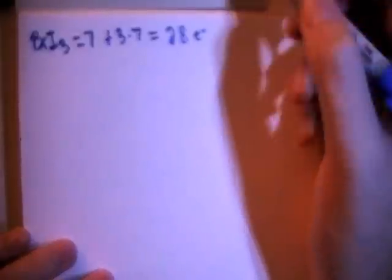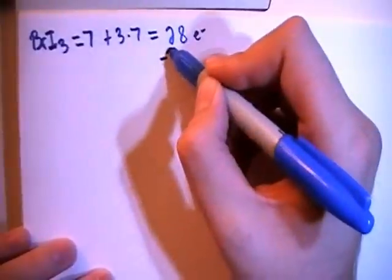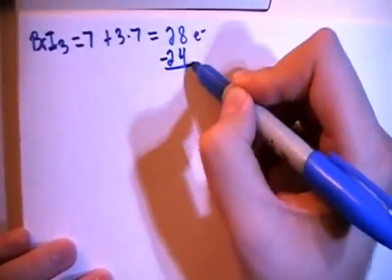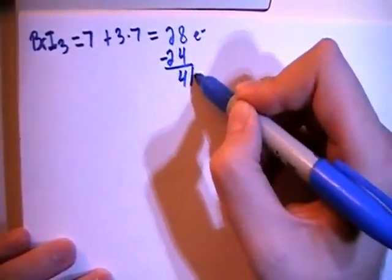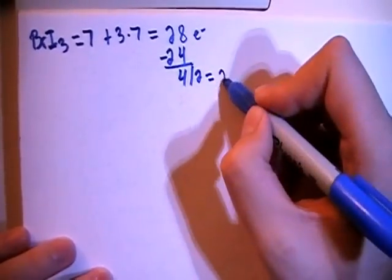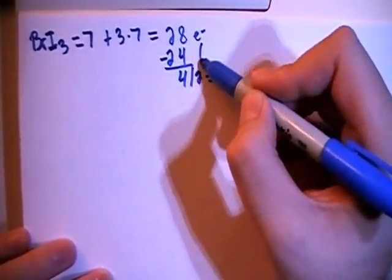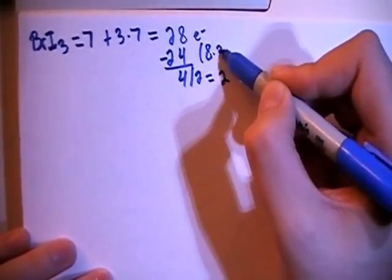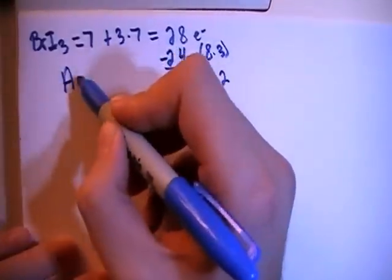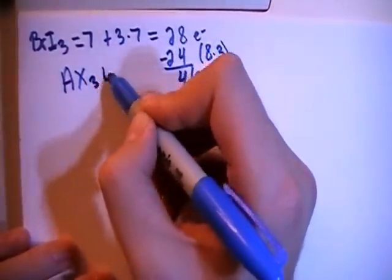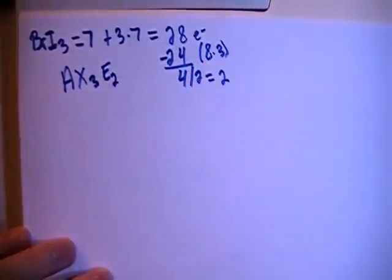Now we can subtract out the largest multiple of 8, which in this case will be 24, and that leaves us with 4 electrons, and divide that by 2, and gives us 2 non-bonding pairs. And since 24 is equal to 8 times 3, that means that this is going to be an AX3E2 structure.